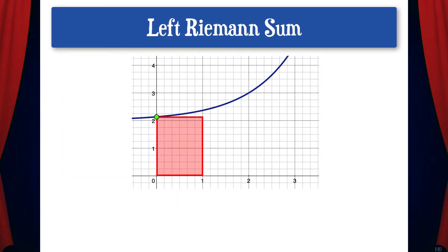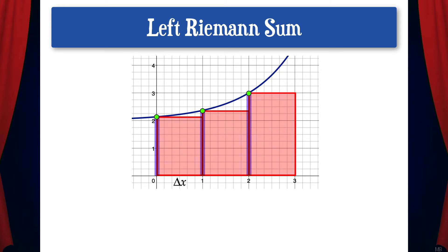Here we have what's called a left Riemann sum. There are three rectangles spaced one unit apart on the interval 0 to 3. I'm using three rectangles just for illustration purposes, but note that using more rectangles will give us a better approximation of the actual area under the curve. Also note that the space between each rectangle is called delta x, and the left side of each rectangle touches the curve and is therefore the height of each rectangle. If we find the sum of the areas of each rectangle, we'll have an approximation of the area under the curve on the interval 0 to 3.